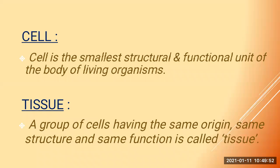A group of cells having the same origin, same structure, and same function is called a tissue. Try to understand: tissues are a group of cells of the same type, having the same structure and performing the same kind of function. Today we are going to study in detail about animal tissues.